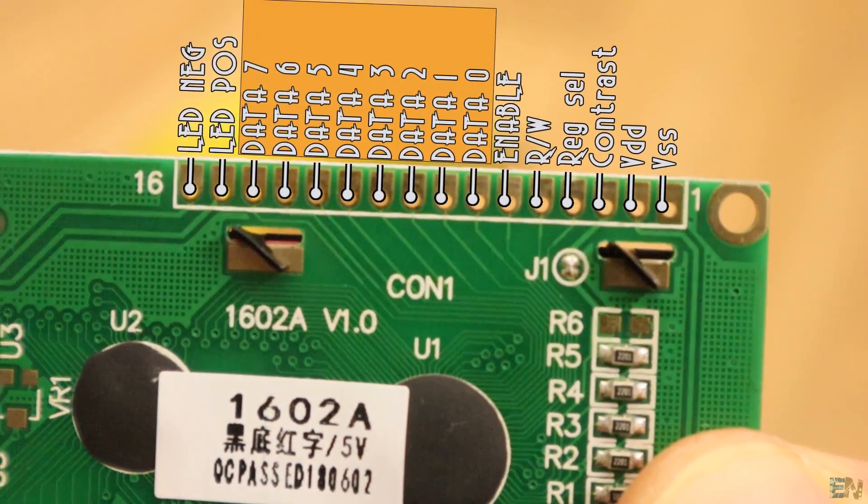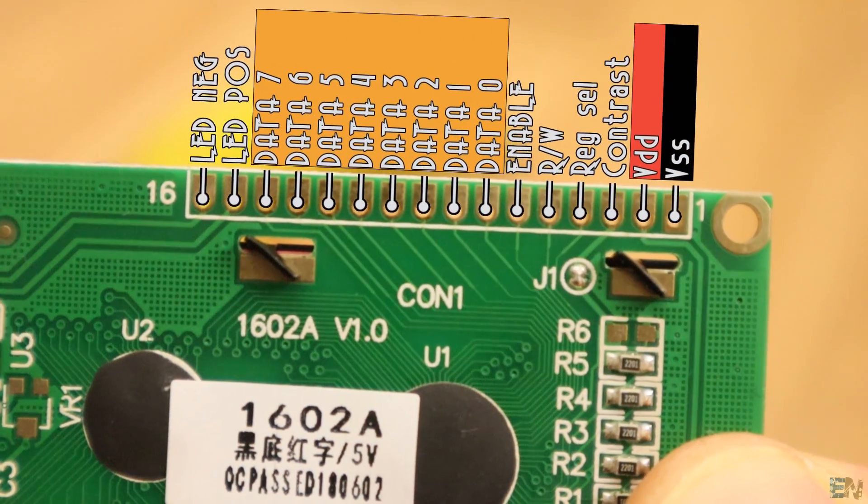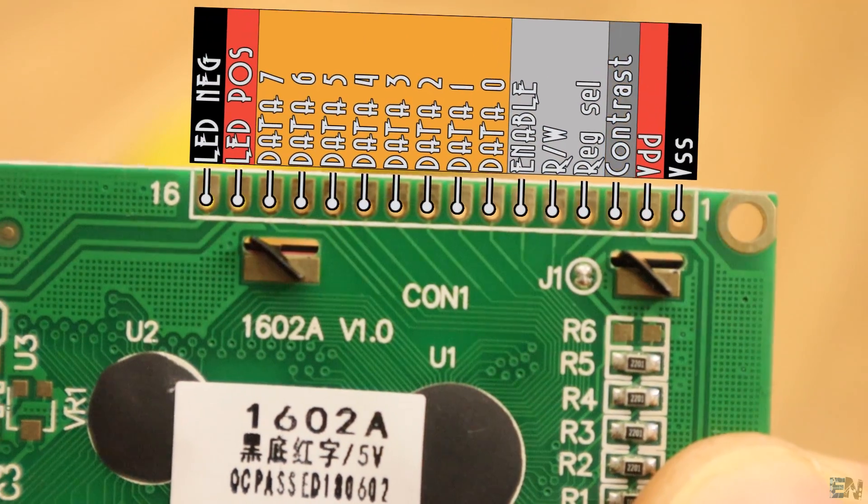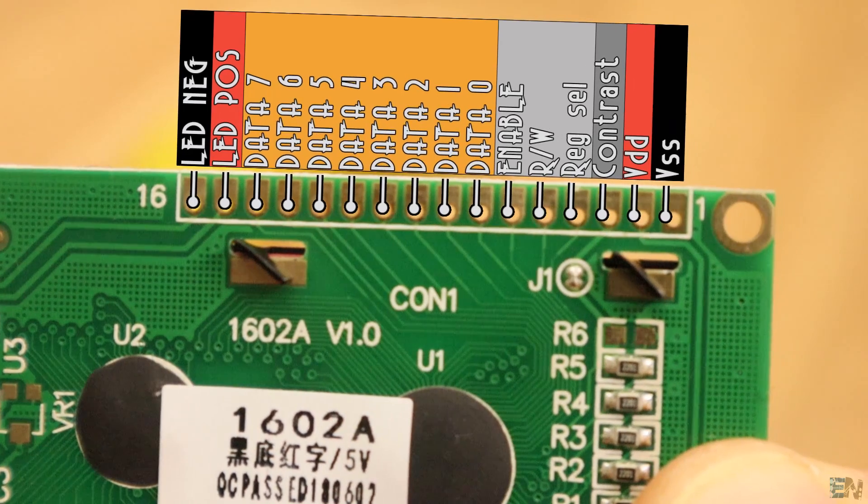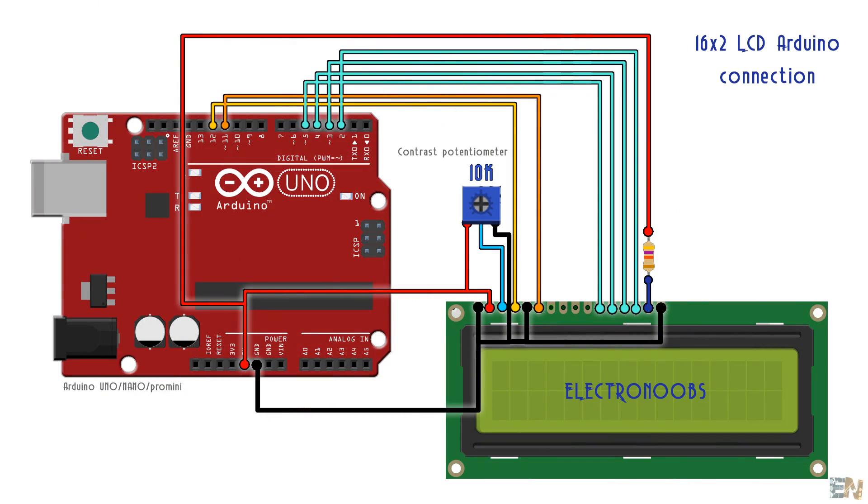8 of these pins are a parallel data input. Then we have the supply, the read or write enable pin and to set the contrast. So, use this schematic for this first example with an Arduino connected directly to the LCD pins.